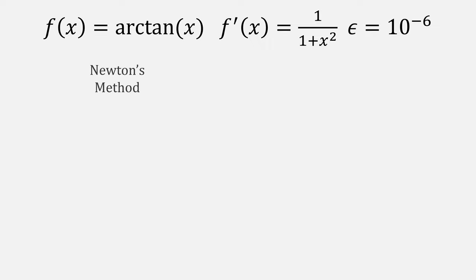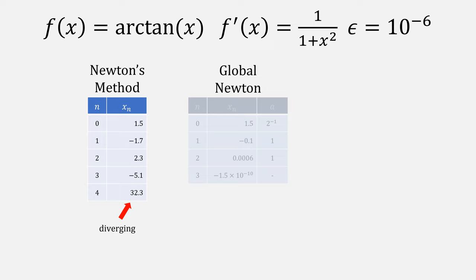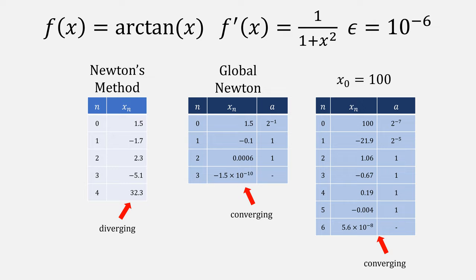Let's look at our arctangent example from earlier. With normal Newton's method starting at the point 1.5, this ends up diverging. But with the global version of Newton's method, we'll do one backtracking step with A of a half. Otherwise, letting A be 1 and this converges. The same is true if we start very far away, for example, the point 100. This still converges with the global Newton's method.